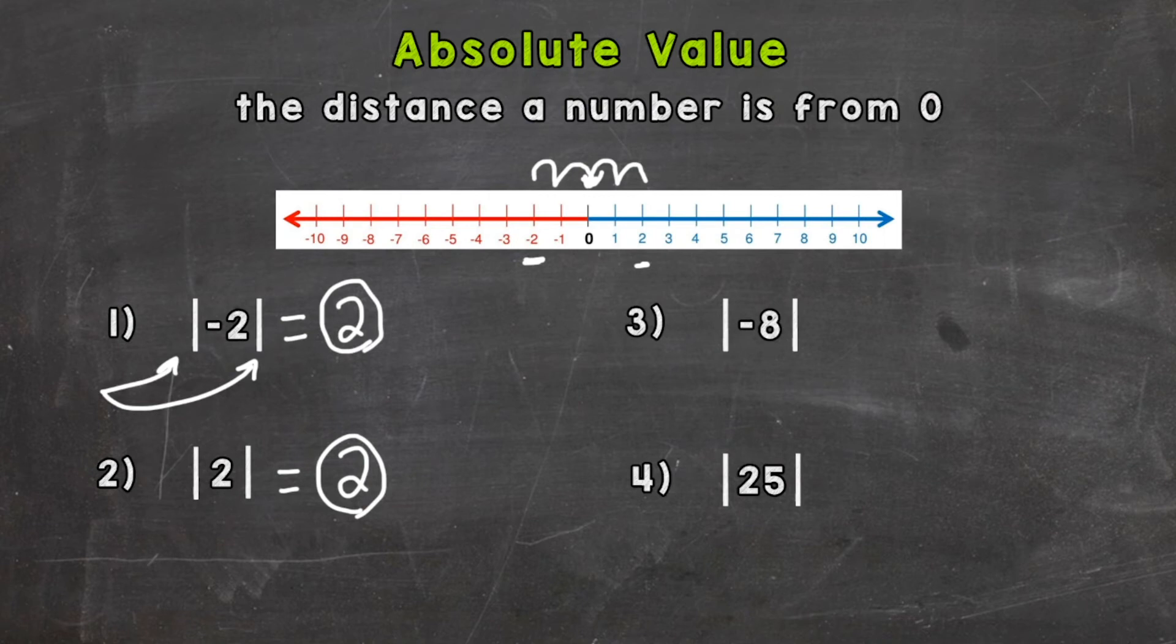Again, absolute value, how far that number is away from zero. So now for number three, we have negative eight. Well, negative eight is over here and it's eight. That's how far it is away from zero. Eight jumps or a positive eight.